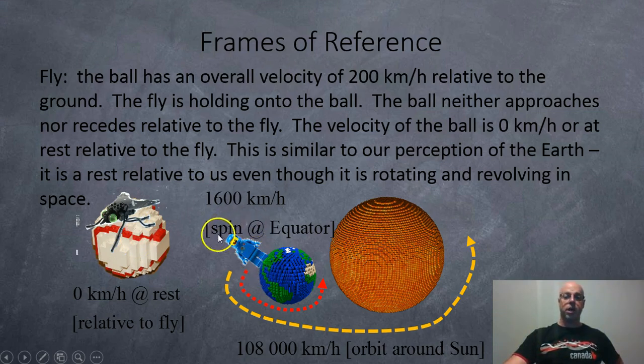We're on the Earth which is spinning at like 1,600 km per hour, and we are orbiting the sun at 108,000 km per hour. But we don't notice because we are stuck to the Earth, just like the fly is to the ball.